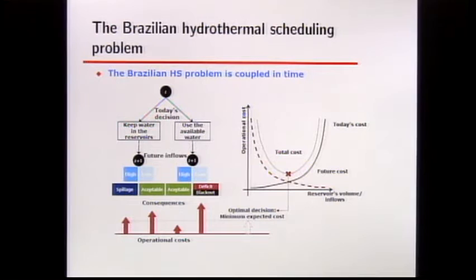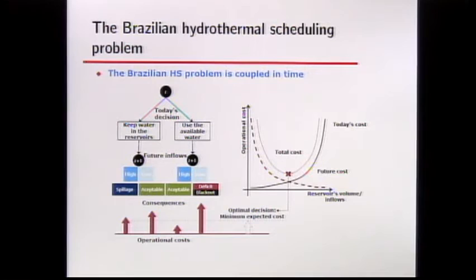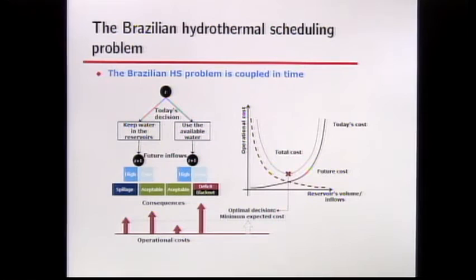Conversely, if we use the available water at stage T to generate electricity and we face low water inflows at the next stage, we can have a blackout — not enough water combined with thermal generation to meet demand. That is the most expensive decision. So we want to make a decision that accounts for the cost of generation today and the future cost, finding an optimal decision that is optimal on average.